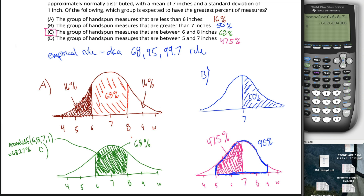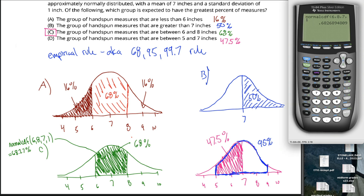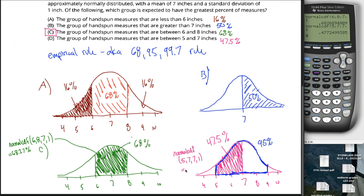For part D, the lower and upper bounds change to 5 and 7 respectively, while the mean is still 7 and the standard deviation is still 1. Hit 2nd and Enter to pull up the most recent entry and edit it — change the 6 to 5 and the 8 to 7. Hit Enter and it spits out the area. We estimated it to be 47.5%, and the normalCDF function gives 47.72%.